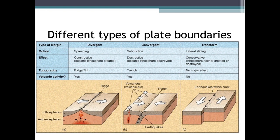At divergent boundaries, plates spread away from each other and new material comes up through that area. At convergent boundaries where plates are hitting each other, subduction occurs — part of the crust is actually subducting back into the mantle. You can get trenches, and this is typically where mountains are formed. Volcanic arcs occur here as well — the Ring of Fire is an example of this. Transform boundaries are where plates slide alongside each other.